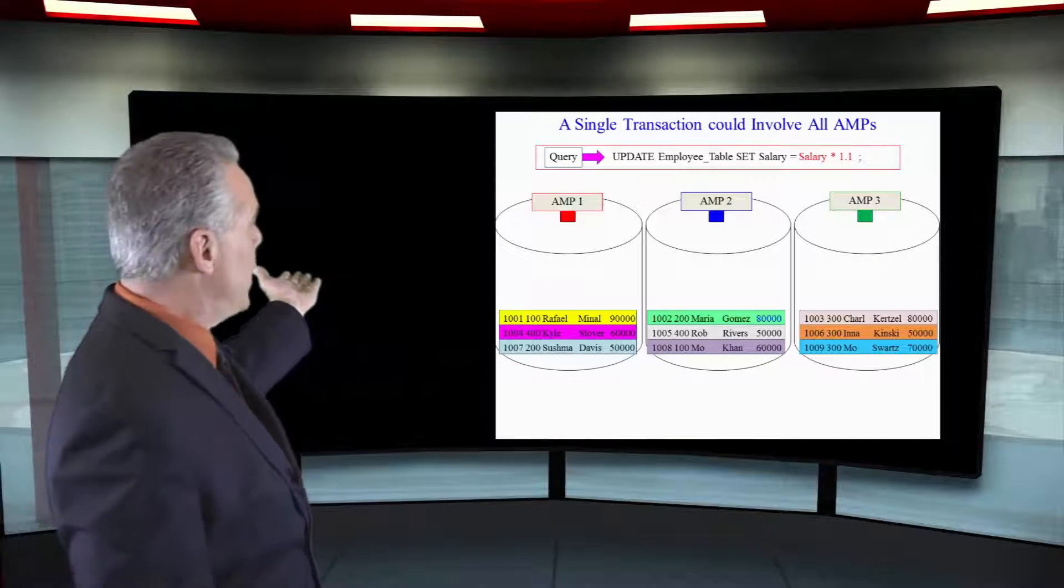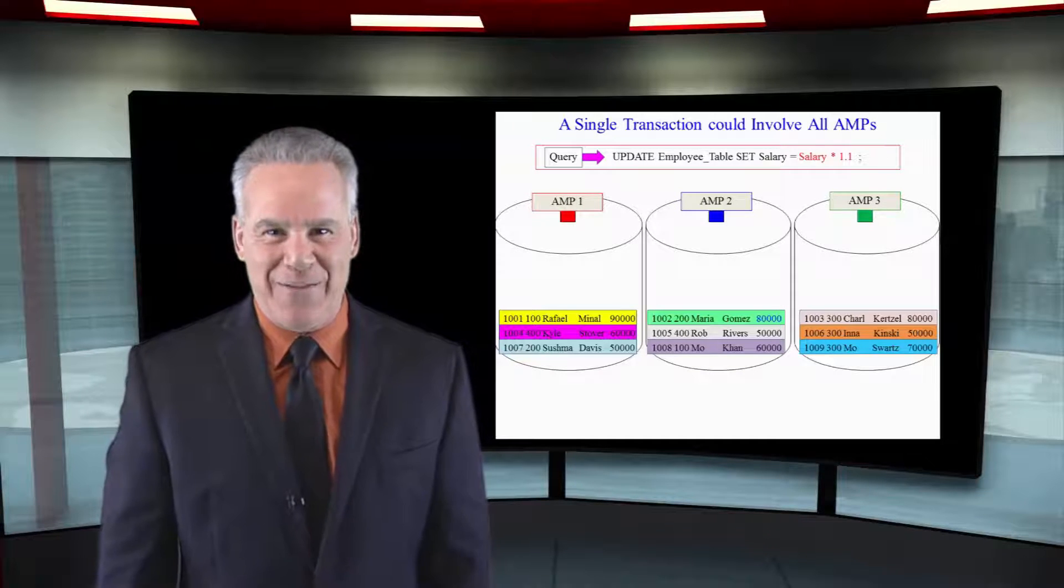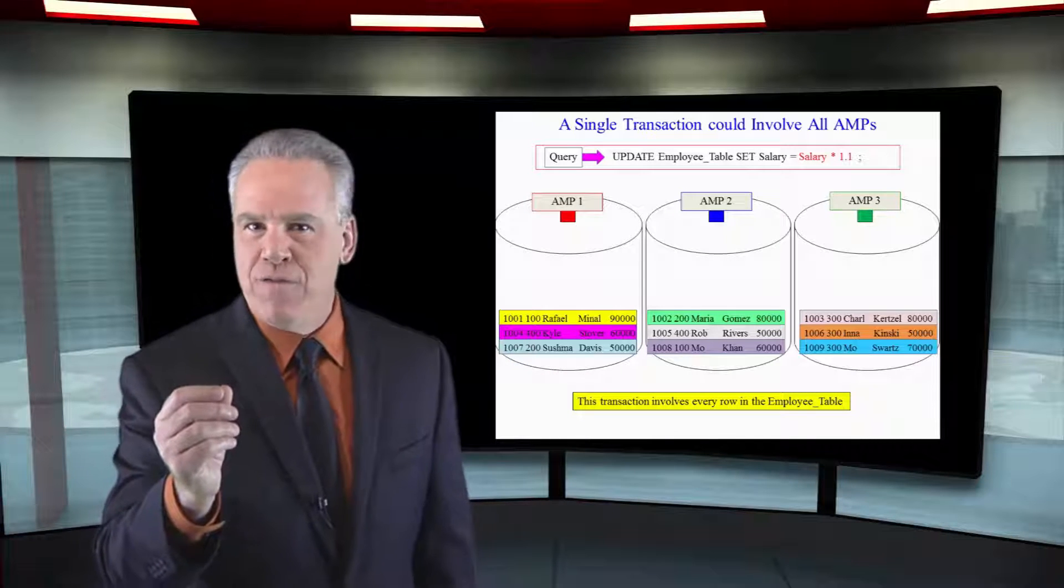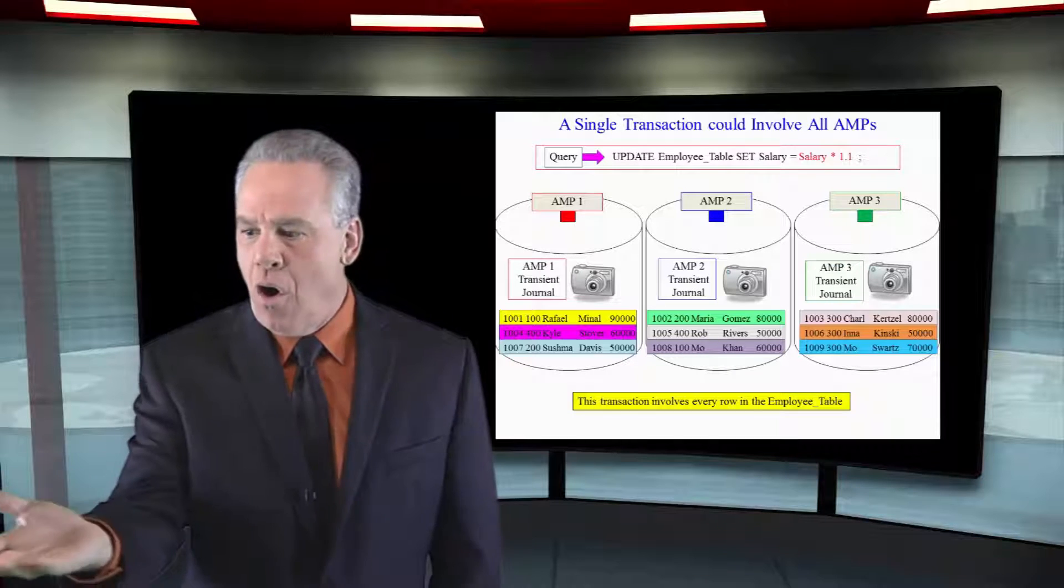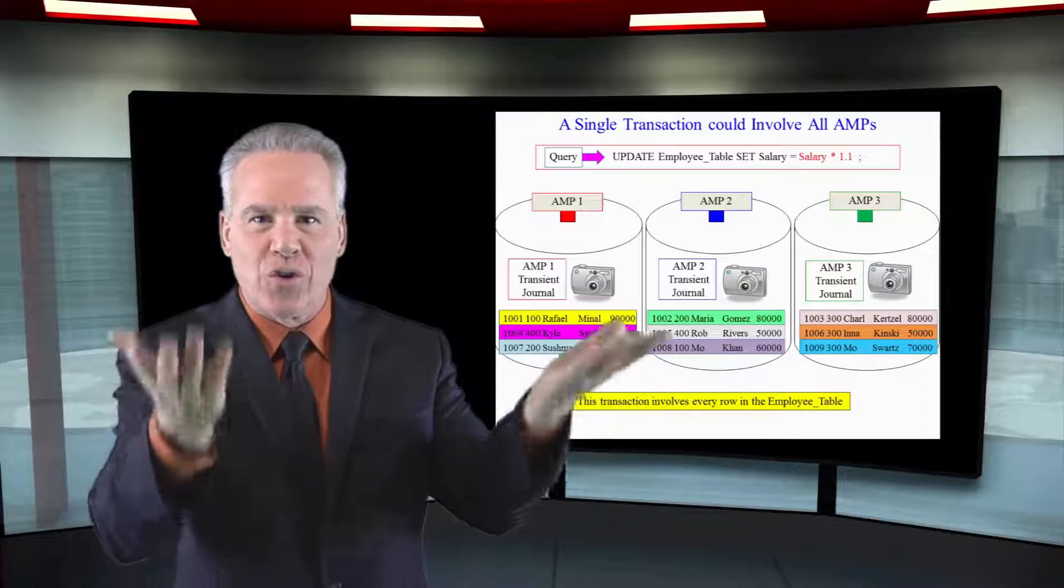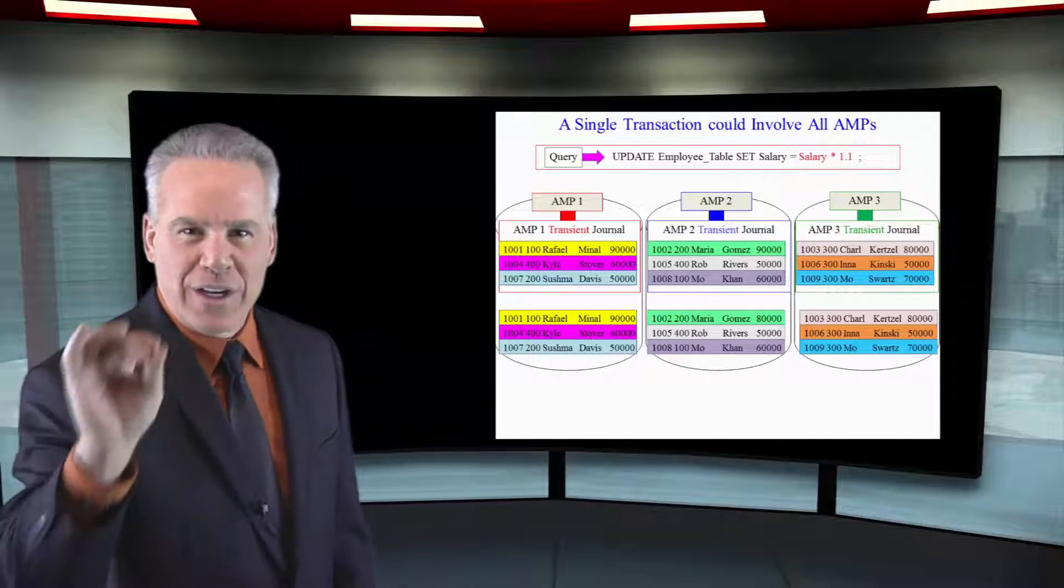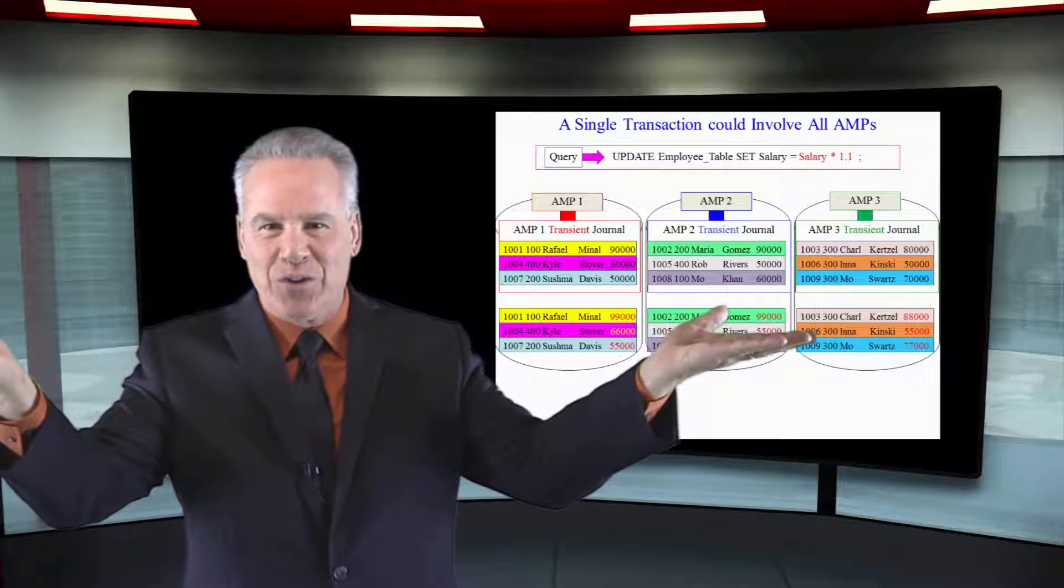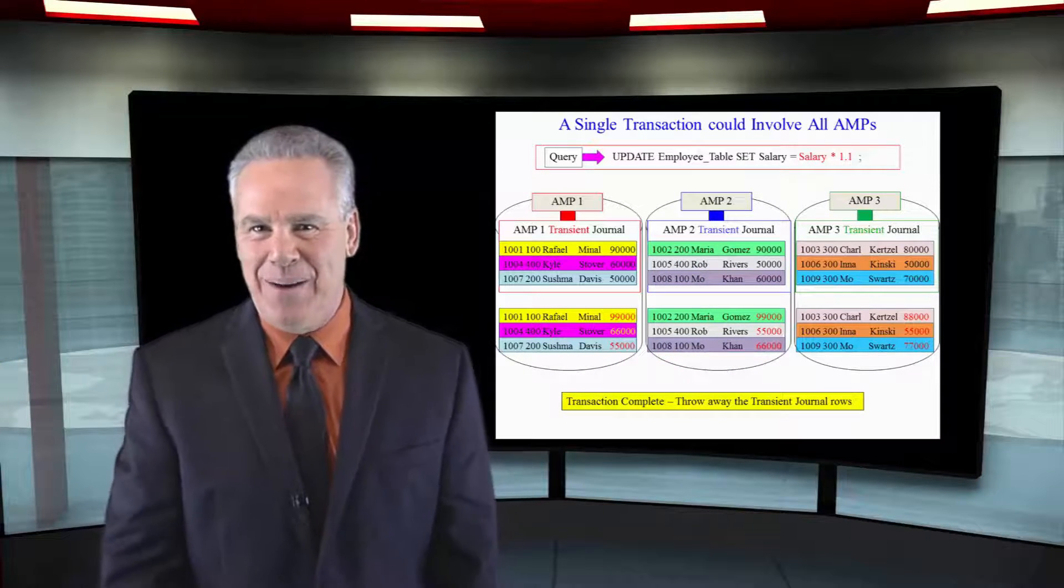We've got an update statement, and we're going to give everybody a 10% raise in the entire company. So every AMP holds some of the employees. They're going to all open their transient journal simultaneously. They will all take a before picture of every single row, put that in their transient journals. Then they will make sure that each employee gets a 10% update.